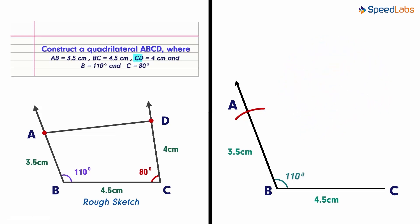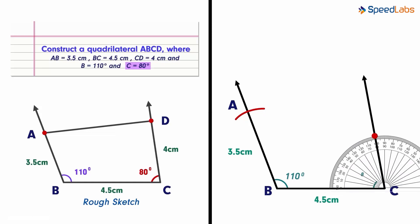We are now left with side CD and side AD. Now what do we do next? We have the measure of angle C. It measures 80 degrees. So we draw the angle from point C using a protractor. We use a protractor as it's not one of the standard angles.